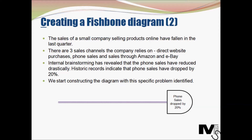The management understands that there are three sales channels the company relies on: direct website purchases, phone sales, and sales through channels like Amazon and eBay. Internal brainstorming has revealed that phone sales have reduced drastically. Further investigation of historic records indicates that phone sales have dropped by 20 percent — so this becomes the specific problem to be addressed using the fish bone diagram.